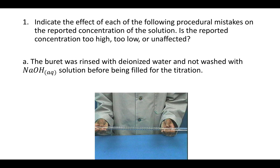Here's some help with the experiment 9 post lab. The first question says: indicate the effect of each of the following procedural mistakes on the reported concentration of the solution. Is the reported concentration too high, too low, or unaffected?